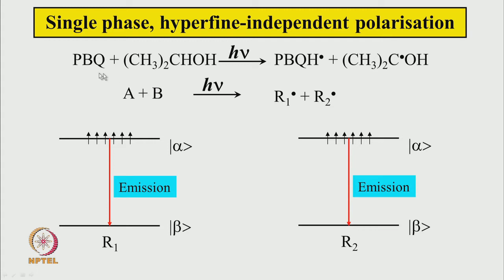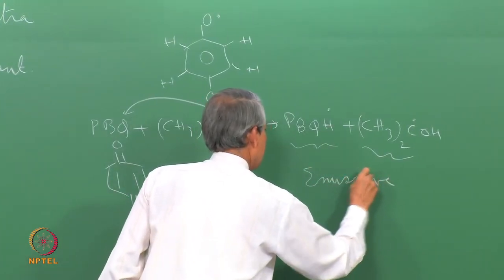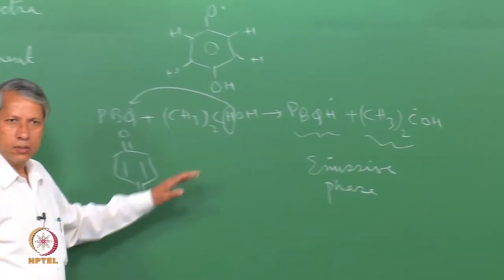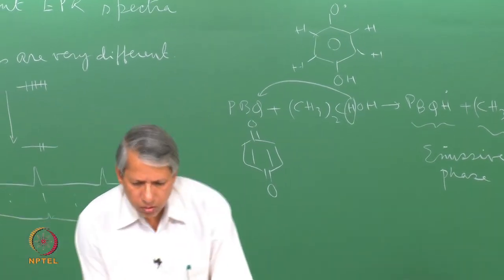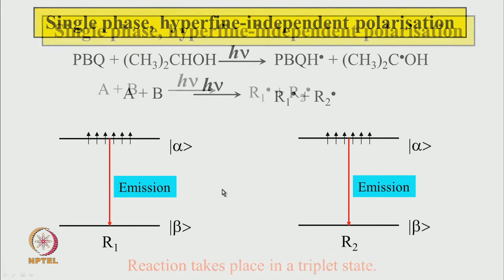Let us first consider the single-phase, hyperfine-independent polarization mechanism, where the example was parabenzoquinone reacting in isopropanol giving two radicals both in emissive phase. Writing this symbolically: molecule A and B react in the presence of light producing radical 1 and radical 2, both in emissive polarization. Radical 1 has its upper Zeeman levels mostly populated giving emissive signal; radical 2 also has the upper level more populated, also giving emission. But all electrons were paired in the ground states of A and B — suddenly radical 1 has alpha spin and radical 2 also has alpha spin. Two unpaired electrons both parallel — how is this possible?